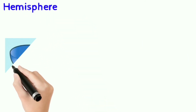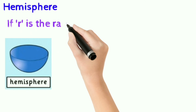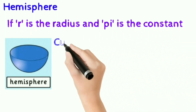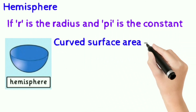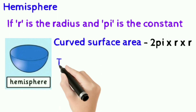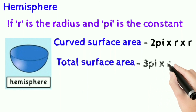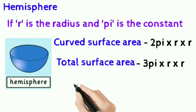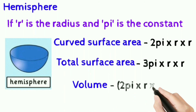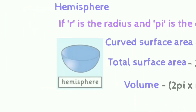Hemisphere: if r is the radius and pi is the constant, curved surface area is 2πr squared; total surface area is 3πr squared; and volume is 2 by 3 times πr cubed.